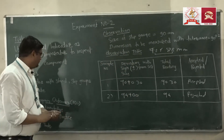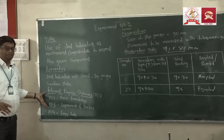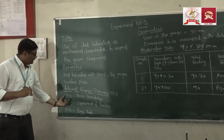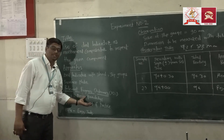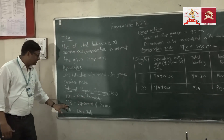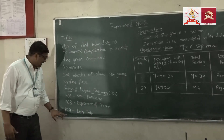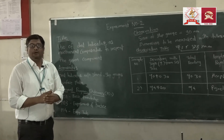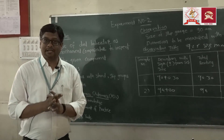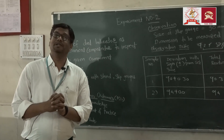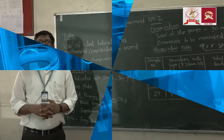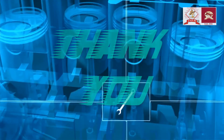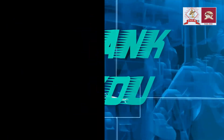From this practical we achieve the relevant outcomes. Three program outcomes are achieved: PO number one — basic knowledge; PO number three — experiment and practice; and PO number four — engineering tools. These three POs are matched in this practical by performing the experiment. Thank you.